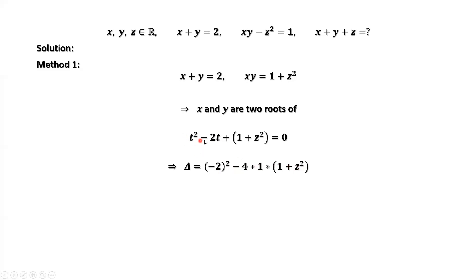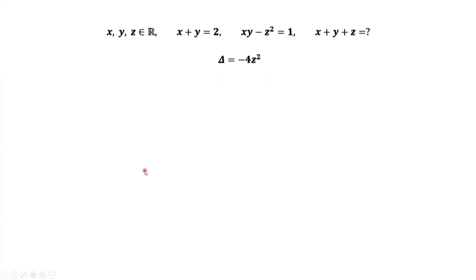Here a equals 1, b equals negative 2, c equals 1 plus z squared. Simplifying the right-hand side, we get delta equals negative 4z squared.